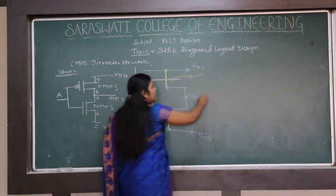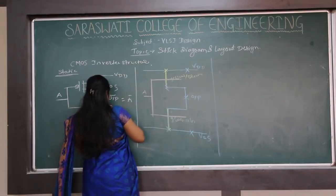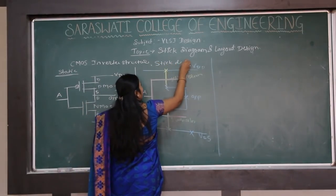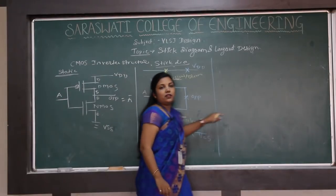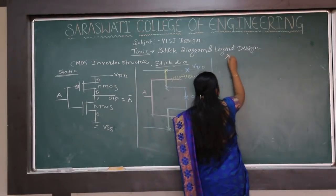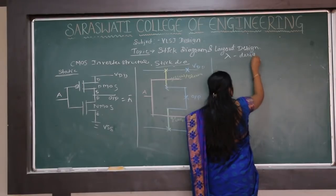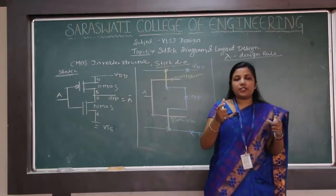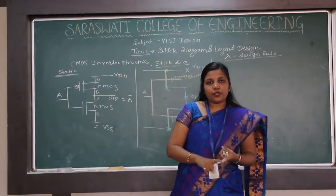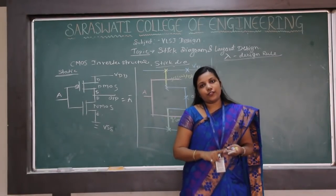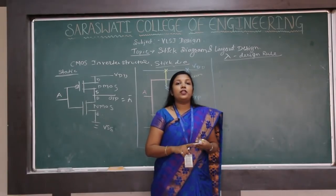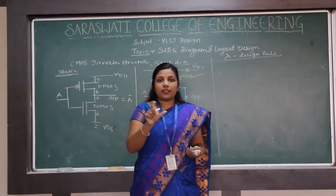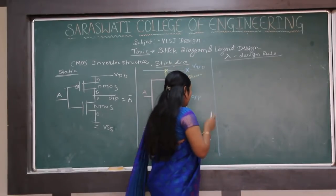From this stick diagram, we can design the layout using lambda design rules. Lambda design rules specify the distance of separation between two layers — whether N diffusion, P diffusion, metal, or polysilicon — and also define the size of contacts. There are two methods: lambda-based and micron-based.